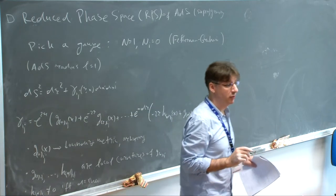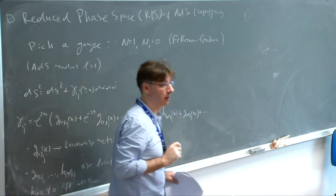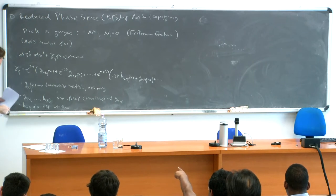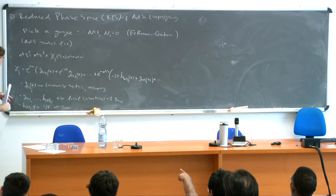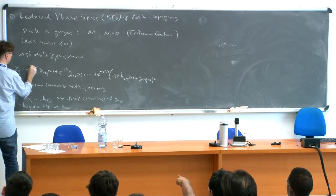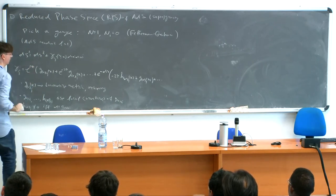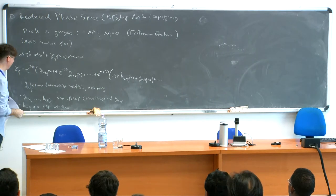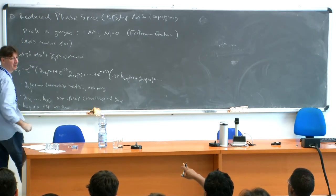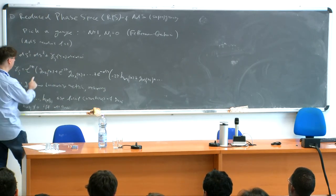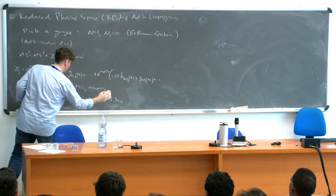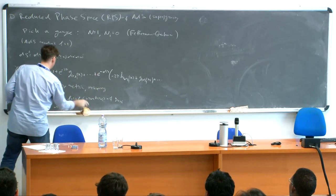The metric expansion is gamma_ij = e^{2r} [g0_ij + e^{-2r} g2_ij + ... ]. The bracket closes there with another bracket.